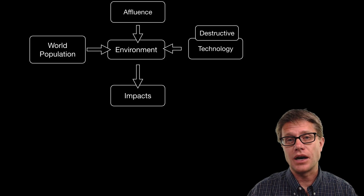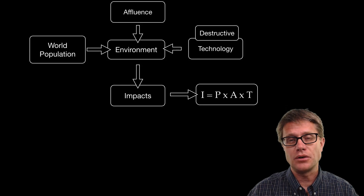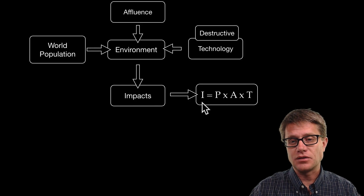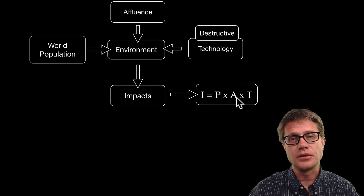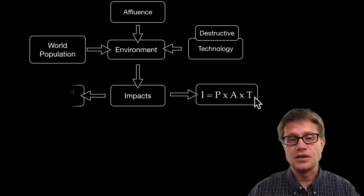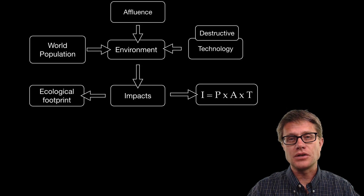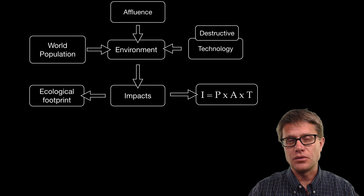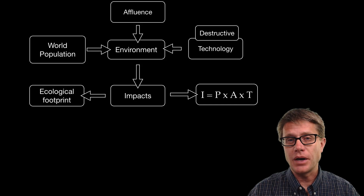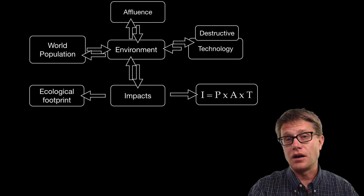One way to measure that is using the IPAT equation. You do not actually have to calculate it, but it is combining three things: the population, the affluence, and the destructive technology. An analogous model is the ecological footprint — it measures how much of the earth we need to support that industry. Now these are feedback loops, and so all of these are going to put impacts on the population itself.